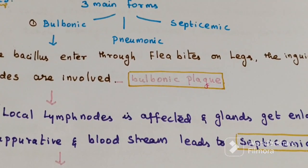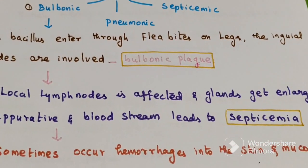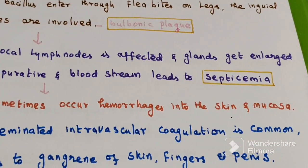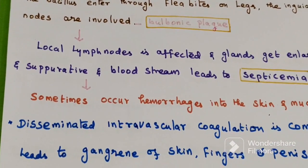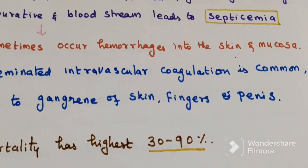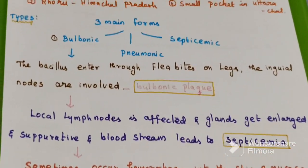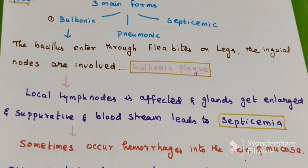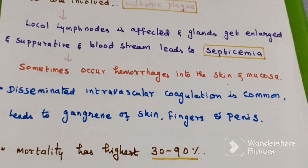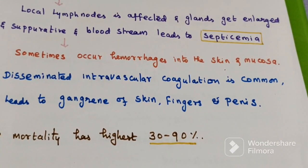The local lymph nodes are affected and the glands get enlarged. Spread to the bloodstream leads to septicemia. Sometimes hemorrhage can occur into the skin and mucosa. Disseminated intravascular coagulation is common. It can lead to gangrene of skin, fingers, and penis. The mortality is highest at 30 to 90%.